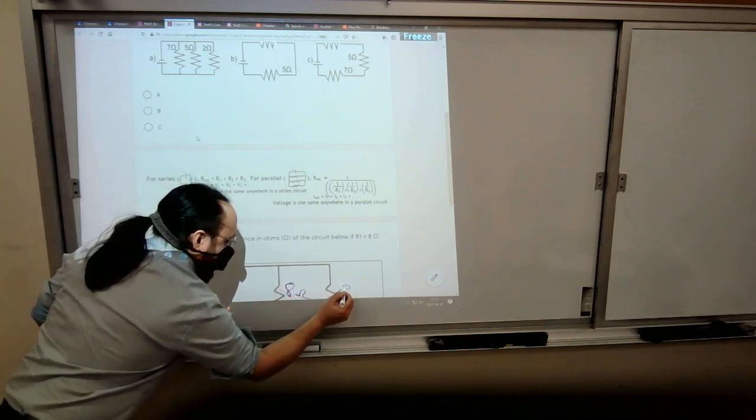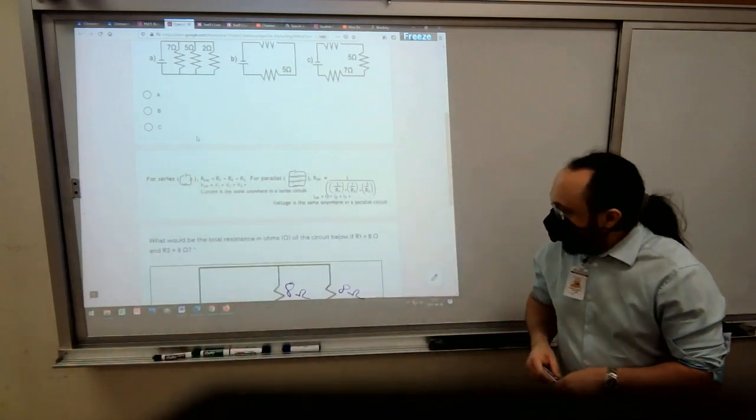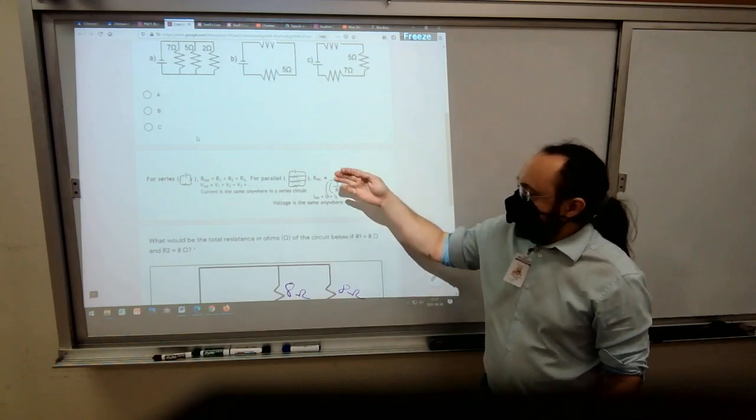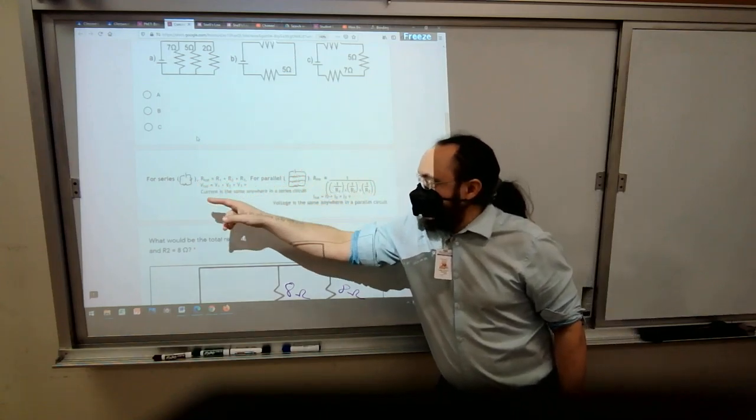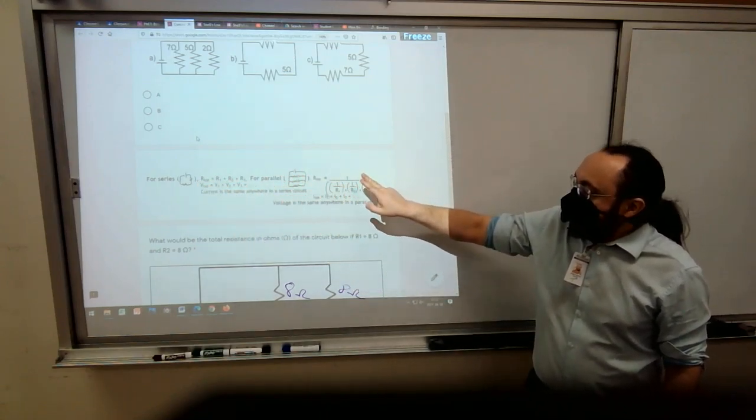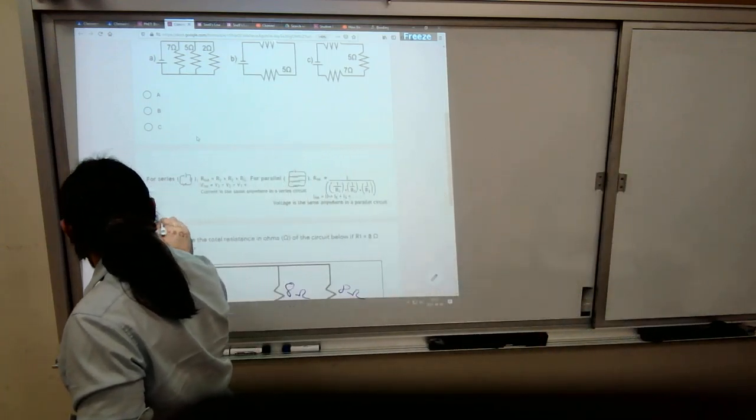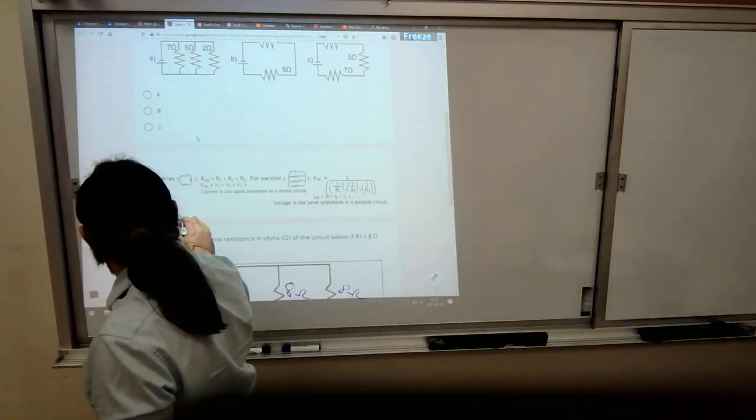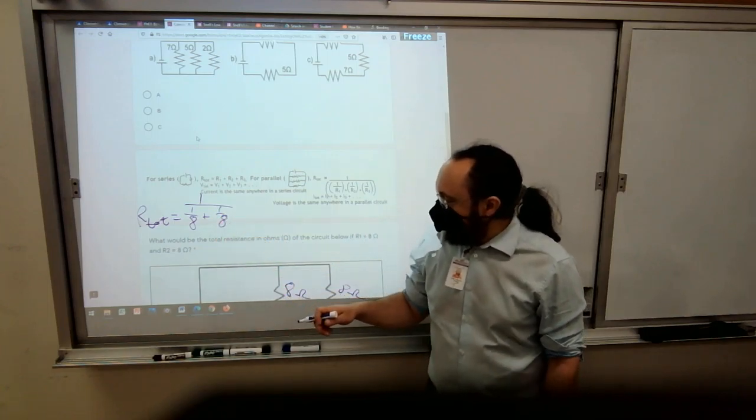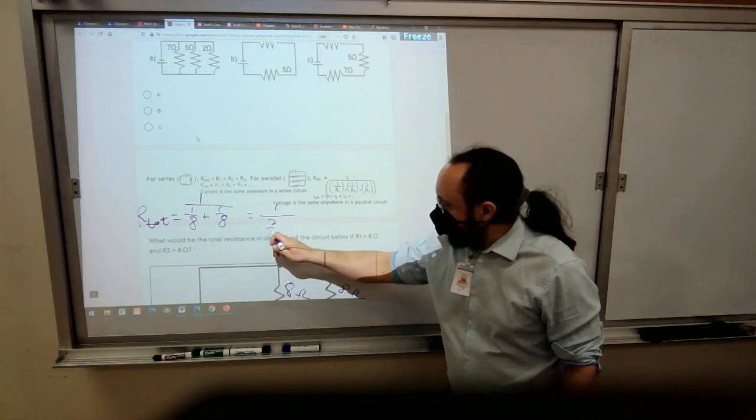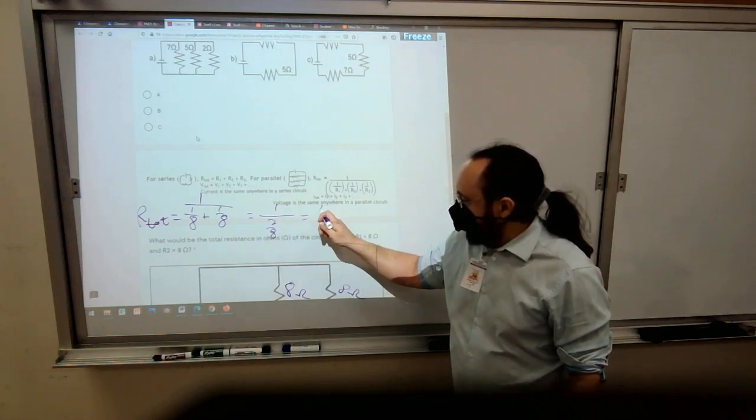Since this is a parallel circuit, it's not just adding them up. That's only for series. For parallel, that's one over: one over R1 plus one over R2. So I'm going to do that. One over R1, that's 8, plus one over R2, that's also 8. One-eighth plus one-eighth is two-eighths, so we can go ahead and say two-eighths is one-fourth.